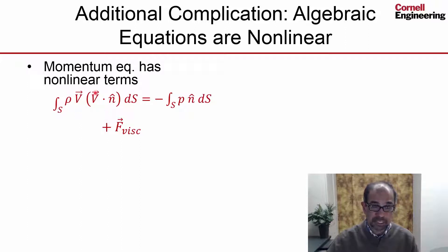That term represents the net momentum outflow out of the control volume that we picked. That's the net pressure force on the control surface, and that's the viscous force on the control surface. That's a nonlinear term because we have a product of velocity times a velocity component. So you have a product of two unknowns, and that's nonlinear.